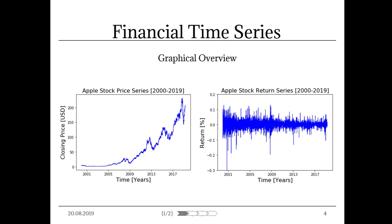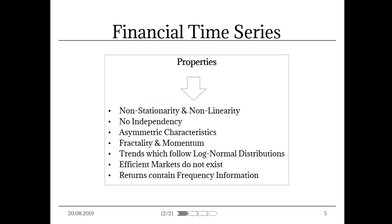This leads us straight towards the question: what properties do financial time series have at all, and what do they mean? Since today's talk is time-limited, I will not show you the classical properties of financial time series, but delve straight into the latest research results and confirmed properties. At first, financial time series are not stationary, they are non-linear and are not independent. This means that whatever has happened yesterday has an unclear, non-linear, and unstable impact on today's development.